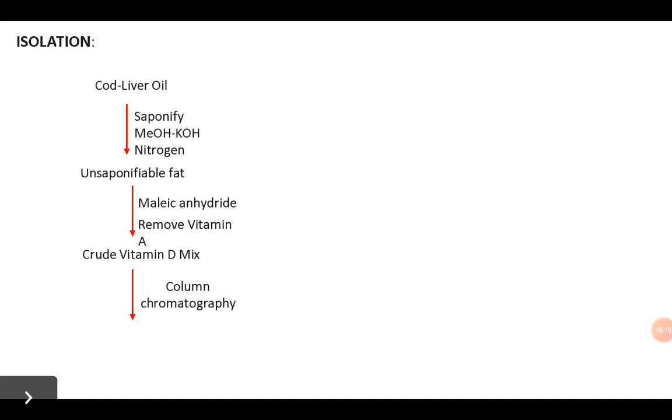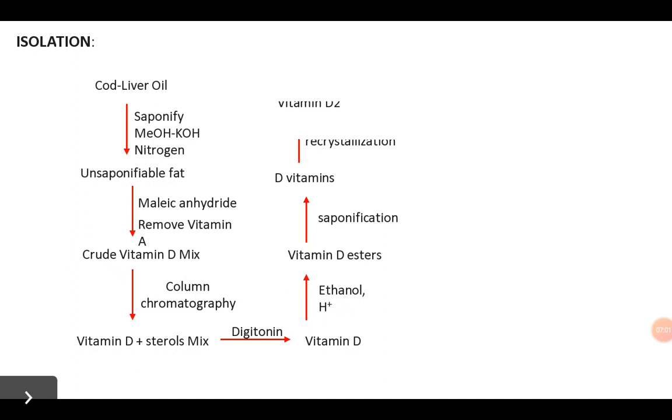What they got is a mixture of vitamin D and remaining unsaponifiable material like steroids. Upon column chromatography, vitamin D2 was always mixed with monohydroxy steroids. The vitamin D plus sterol mixture was treated with digitonin, which has capacity to interact with steroids and form complexes, thereby separating steroids from this mixture. They then esterified vitamin D in presence of ethanol and acid to obtain vitamin D esters.